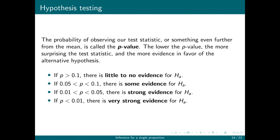If p is greater than 10 percent, there is little to no evidence for the alternative hypothesis — things that happen 10 percent of the time happen all the time. If p is between 5 and 10 percent, there is some evidence for the alternative hypothesis. If p is between 1 and 5 percent, there is strong evidence. And if p is less than 1 percent, there is very strong evidence for the alternative hypothesis.